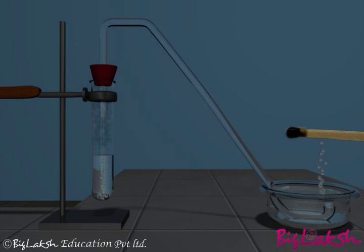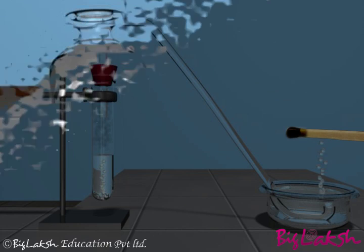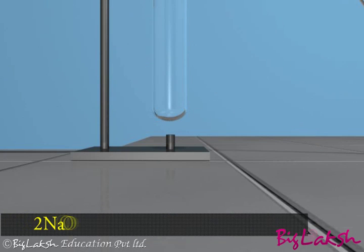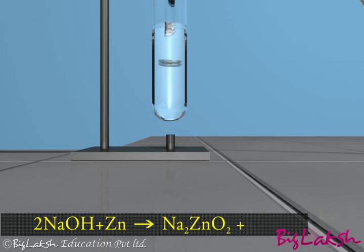Metal displaces hydrogen from the acid. Similarly, strong base like sodium hydroxide reacts with zinc renewals to form sodium zincate along with the evolution of hydrogen gas.